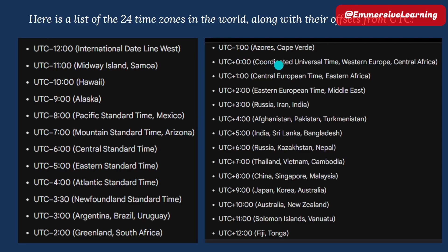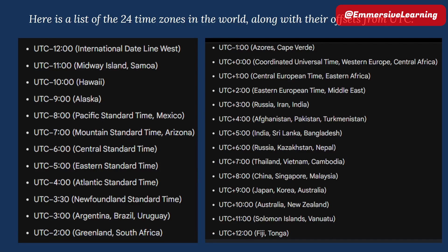So if you look at the coordinate universal time, it will be plus three. That means if you look at the concept of the country, you can see that the country will be more than 30 times. If you look at Somalia, you can see that the country will be more than 30 times. If you look at the United States, you can see the country will be more than 30 times.